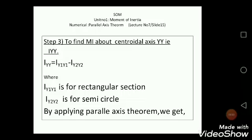Step 3: To find moment of inertia about centroidal axis YY. So Iyy = Iy1y1 - Iy2y2, where Iy1y1 is for rectangular section and Iy2y2 is for semicircle section. By applying parallel axis theorem we get: